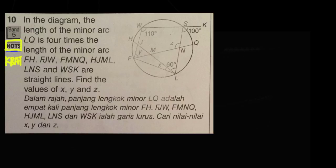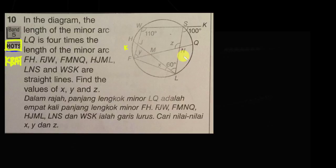Let's have a look at this question. In the diagram, the length of the minor arc LQ is four times the length of the minor arc FH. So if the arc FH is k, then LQ will be 4k. Their ratio is basically 4 to 1. And they also tell you all of these are straight lines, and you need to find the value of x, y, and z.